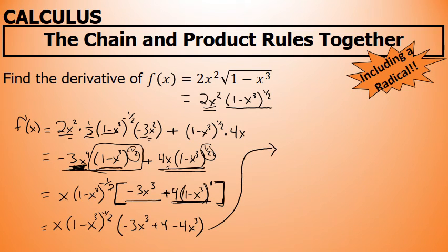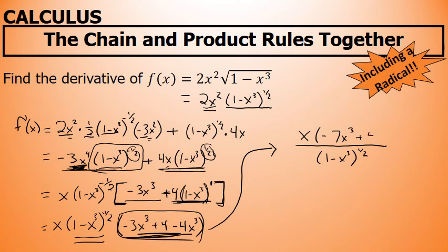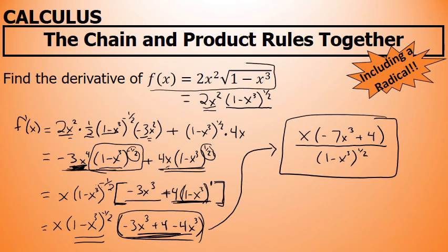Now I can combine like terms inside the parentheses. I also have a factor with a negative exponent, so I'll move that factor to the denominator of a fraction, writing it as (1 minus x³)^(1/2), or equivalently the square root of (1 minus x³). Inside the numerator, negative 3x³ minus 4x³ is negative 7x³, plus 4. The final answer is x times (negative 7x³ + 4), all over the square root of (1 minus x³).